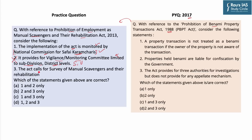The third statement says the Act calls for a survey of manual scavengers and their rehabilitation — this is correct, as the Act mandates conducting a survey to calculate how many people are actually involved in manual scavenging. Based on this, the answer to this question is option C — that is, only statements 1 and 3 are correct. The answer to the corresponding UPSC question would be option B — that is, statements 1 and 3 are incorrect.